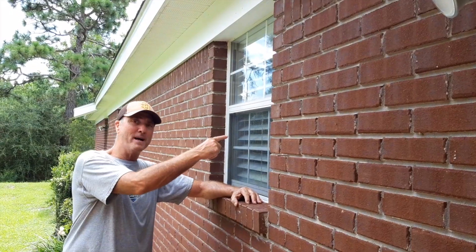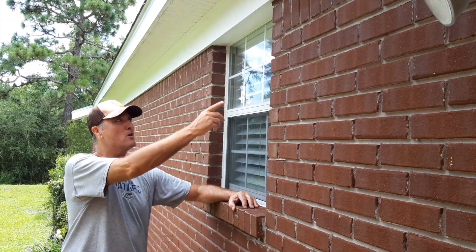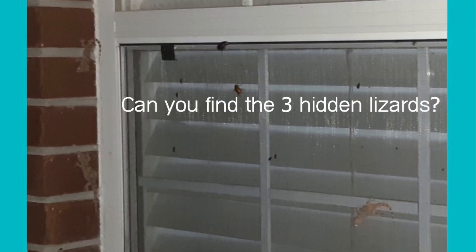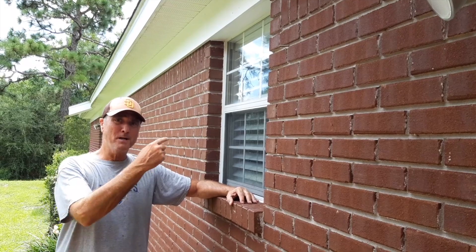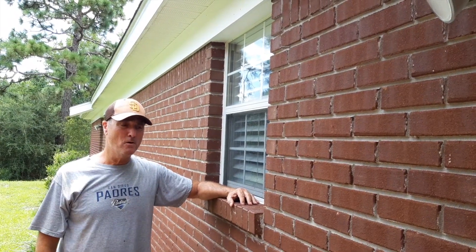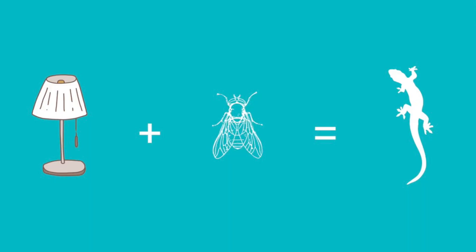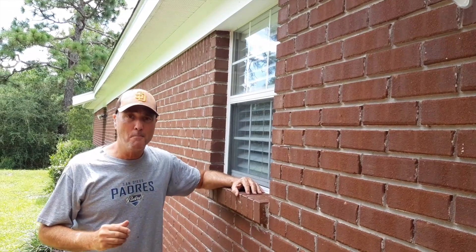This is my kitchen window. You should see my kitchen window at night — there's all kinds of lizards hanging out around it. Why are lizards hanging around my kitchen window? Because there are insects attracted to the light, and the lizards want to eat the insects that are attracted to the light. It's pretty smart, isn't it? That's called a learned behavior.